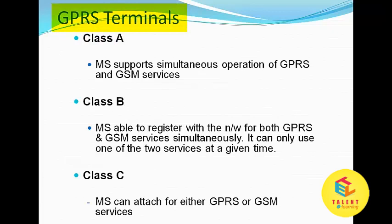GPRS terminals have three classes. Class A MS supports simultaneous operation of both GPRS and GSM services. Class B MS is able to register with the network for both GPRS and GSM services simultaneously, but can only use one of the two services at a given time.